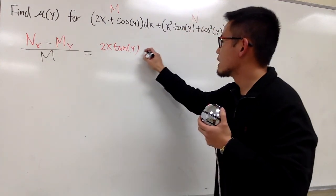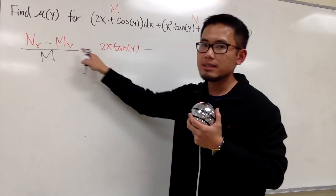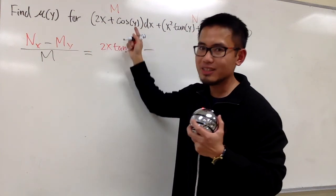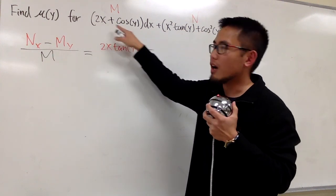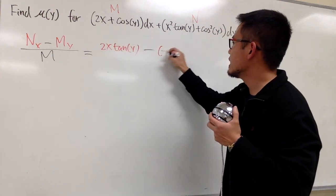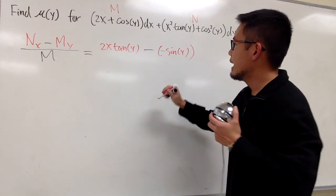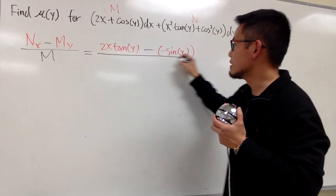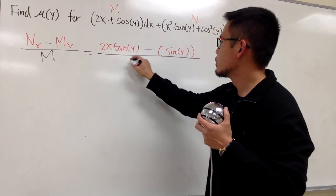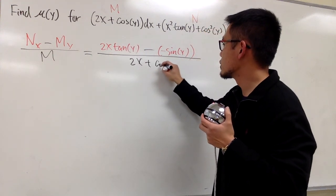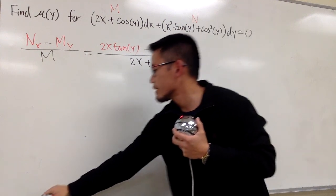Next, we are going to subtract M sub y, means we look at this and differentiate this with respect to y. This is going to give us zero. The derivative of cosine y is negative sine y, and we have it. This is all over the original M, which is just that, 2x plus cosine of y.